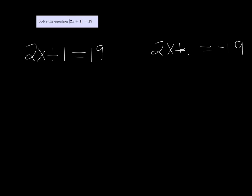Then you just solve each one independently. So I'm going to subtract 1 in the first equation on both sides, and I get 2x equals 18, divide by 2, x is equal to 9.